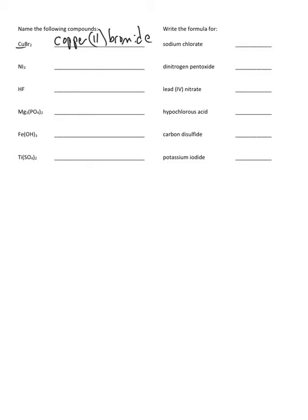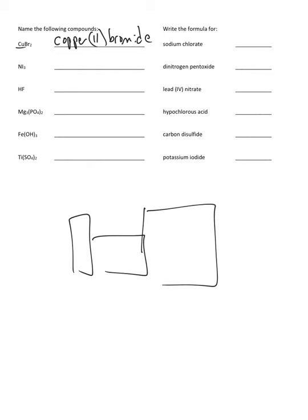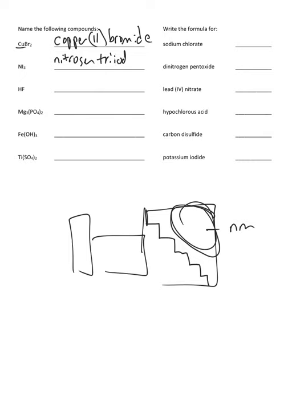NI3: nitrogen is a nonmetal. Using the periodic table with the red staircase starting by bromine — any element to the right of that staircase is treated as a nonmetal. So if you have two nonmetals together, we have to use prefixes. This would be nitrogen triiodide.